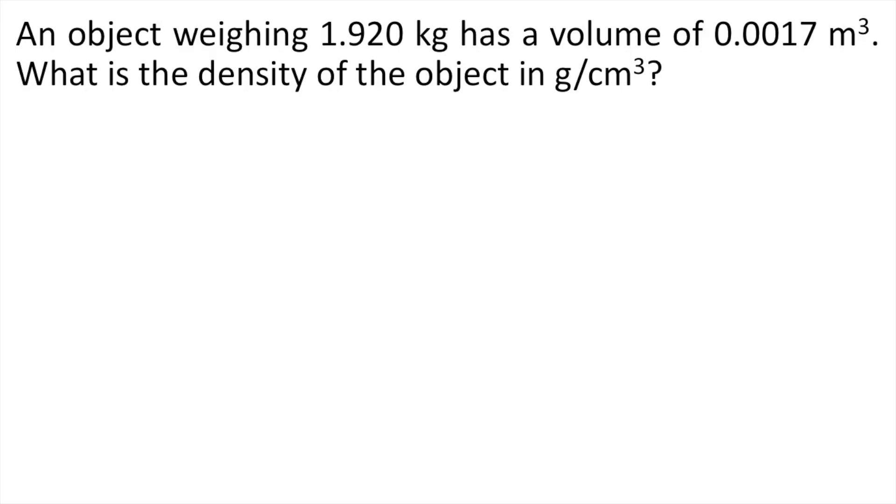An object weighing 1.920 kilograms has a volume of 0.0017 cubic meters. What is the density of the object in grams per cubic centimeters?